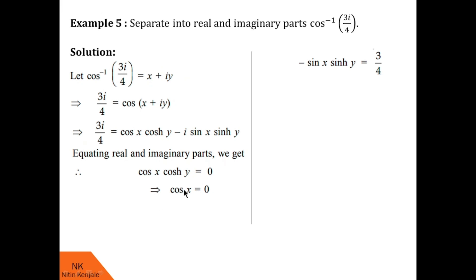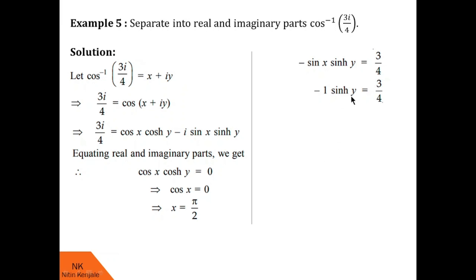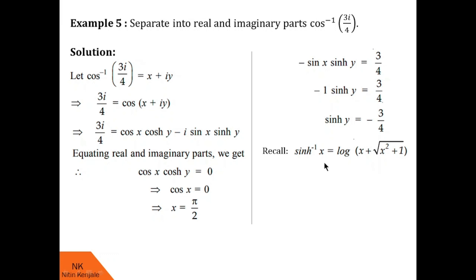From cos(x)·cosh(y) = 0, we have cos(x) = 0 or cosh(y) = 0. Since cosh(y) = (e^y + e^(−y)) / 2 is never equal to 0, we must have cos(x) = 0, giving x = π/2. Substituting x = π/2 into −sin(x)·sinh(y) = 3/4, we get −sin(π/2)·sinh(y) = 3/4, that is −1·sinh(y) = 3/4, so sinh(y) = −3/4. Therefore y = sinh⁻¹(−3/4). We know that sinh⁻¹(x) = log(x + √(x² + 1)), which we studied in example 1.